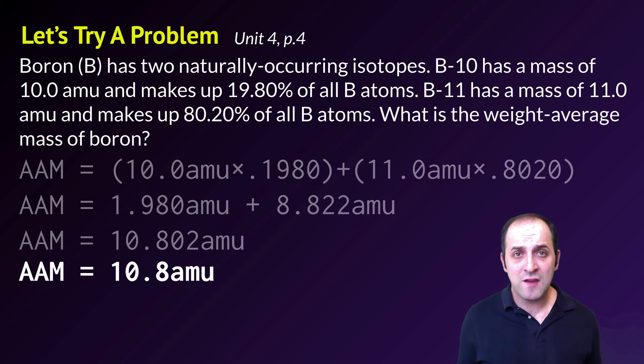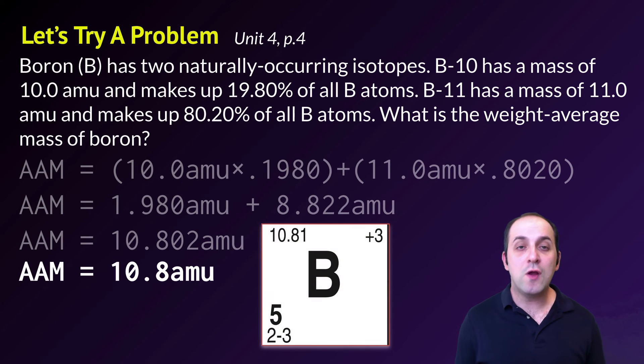Does this make sense? If it doesn't, take a moment and write down any questions that you have. If we look at the periodic table for boron, we can see that we're pretty close to what is reported on the periodic table. So boron's average atomic mass on the periodic table is reported as 10.81 atomic mass units.